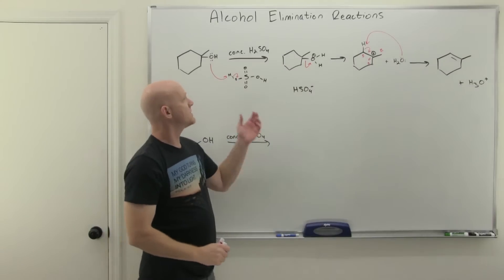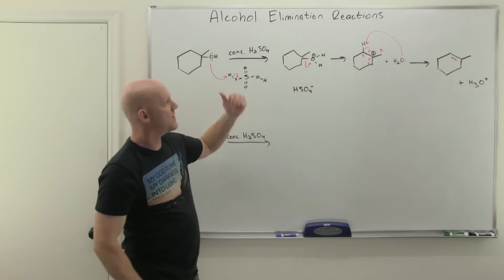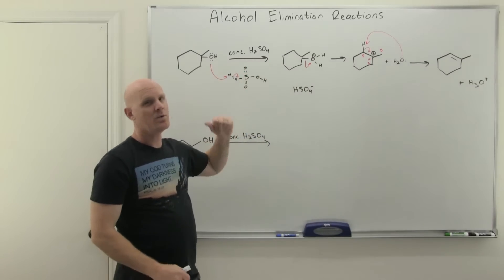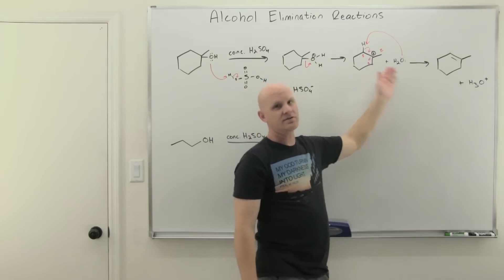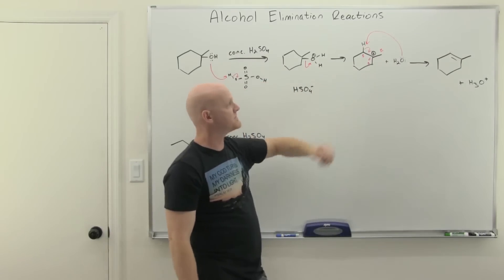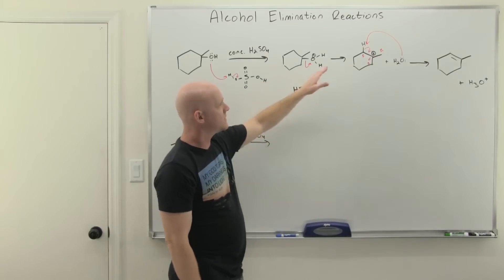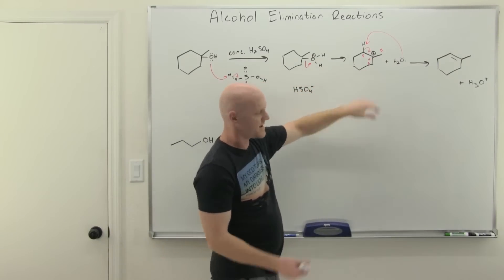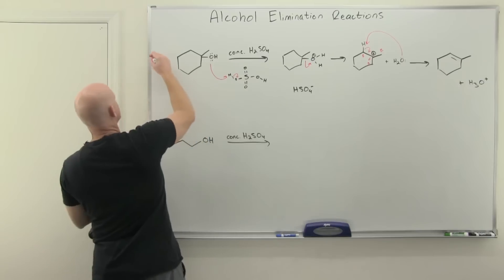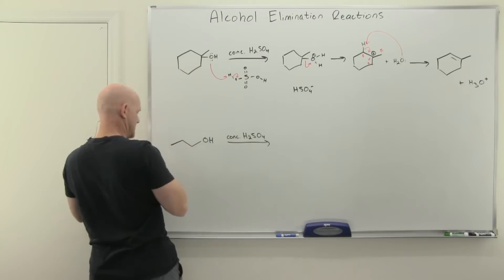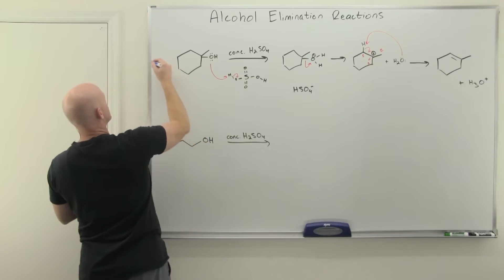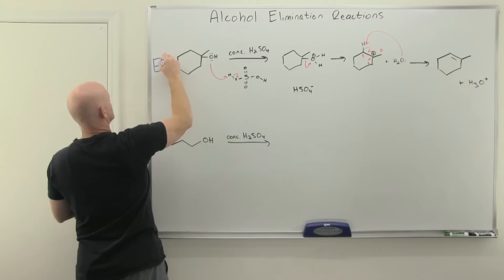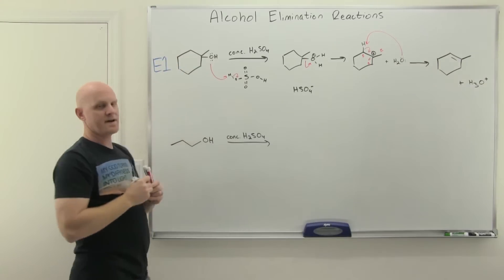Looking at our mechanism: with our tertiary alcohol, this went by an E1 mechanism. We had the leaving group leave before deprotonating, so it happened in two separate steps. The slow step was the carbocation formation. This is the E1 mechanism.